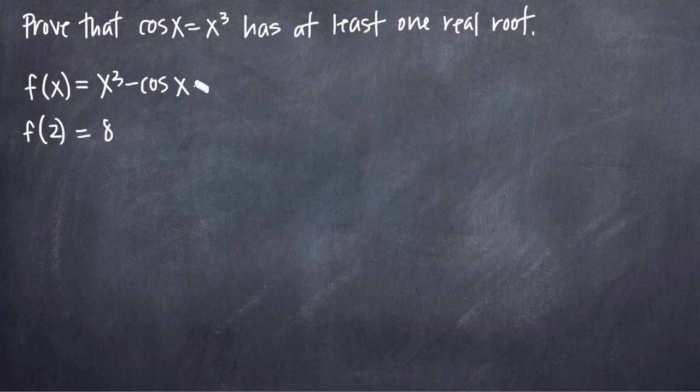We may not know off the top of our heads the value of cosine of 2, and we really don't need to because what we can show is that the maximum possible value for cosine of x is positive 1. So even if this is positive 1 here, we'd get 8 minus 1, and that would give us a value of 7.